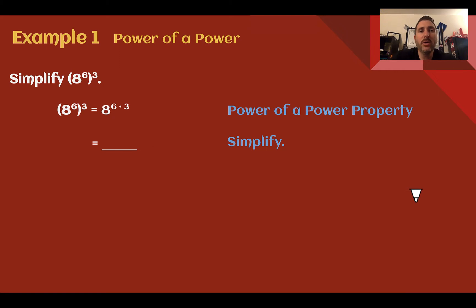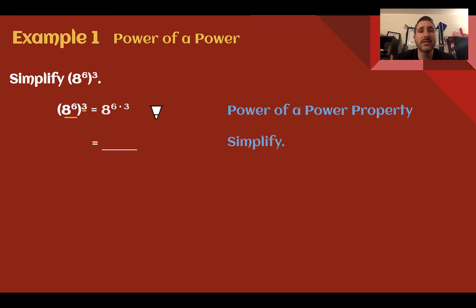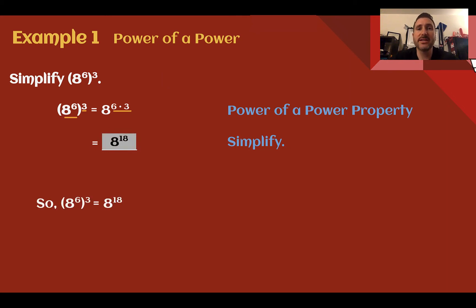Example 1, power of a power: Simplify 8 to the 6th raised to the 3rd power. I can see that I have a power inside parentheses and another exponent outside, so using my power of a power property, I multiply the exponents. 6 times 3 is 18, so simplified this would just be 8 to the 18th power.